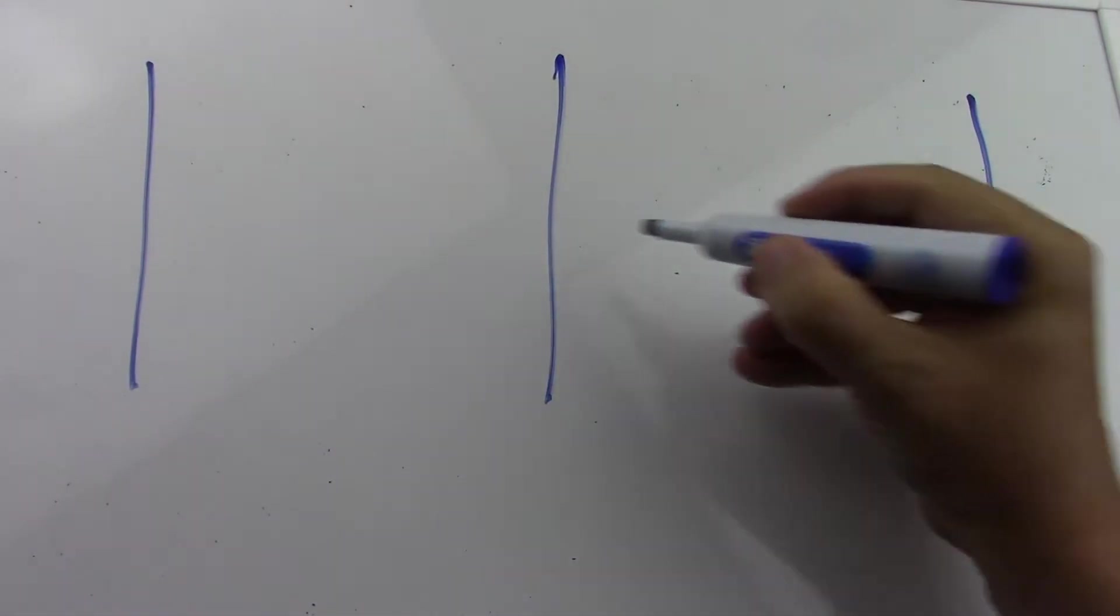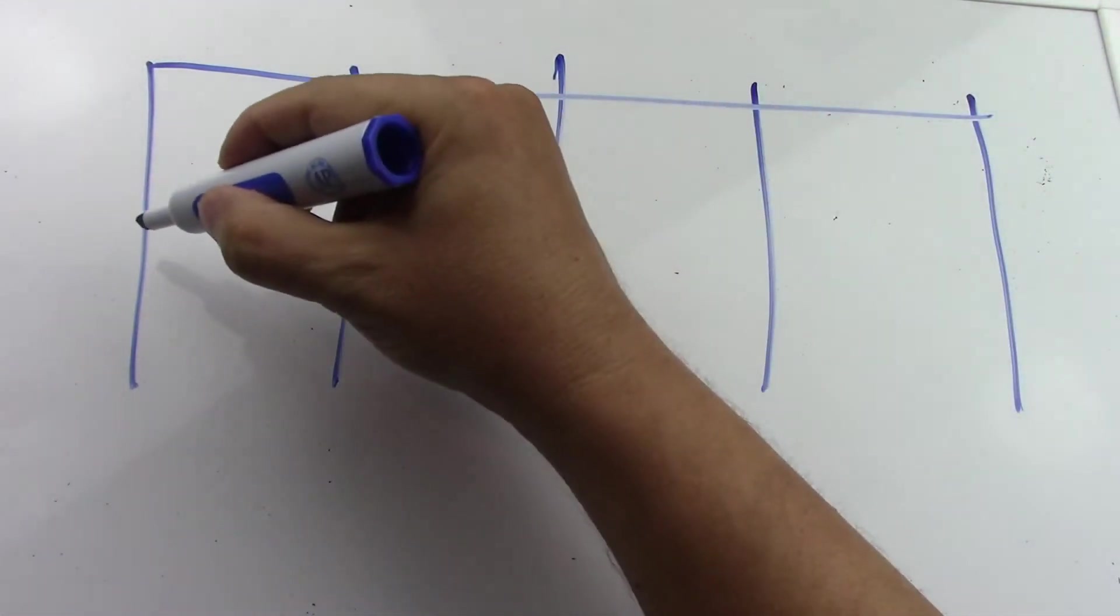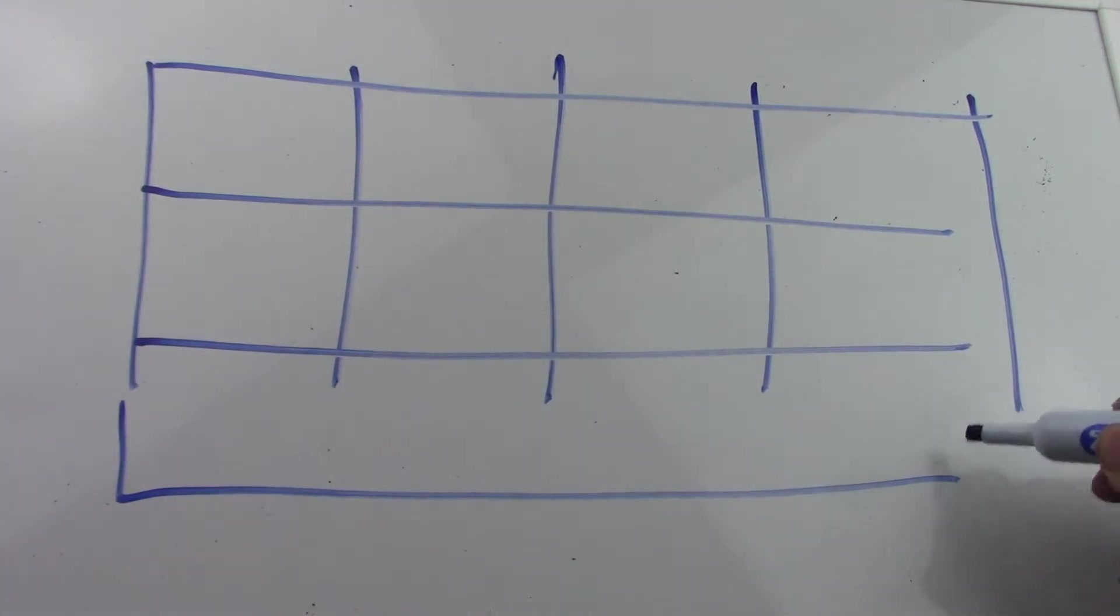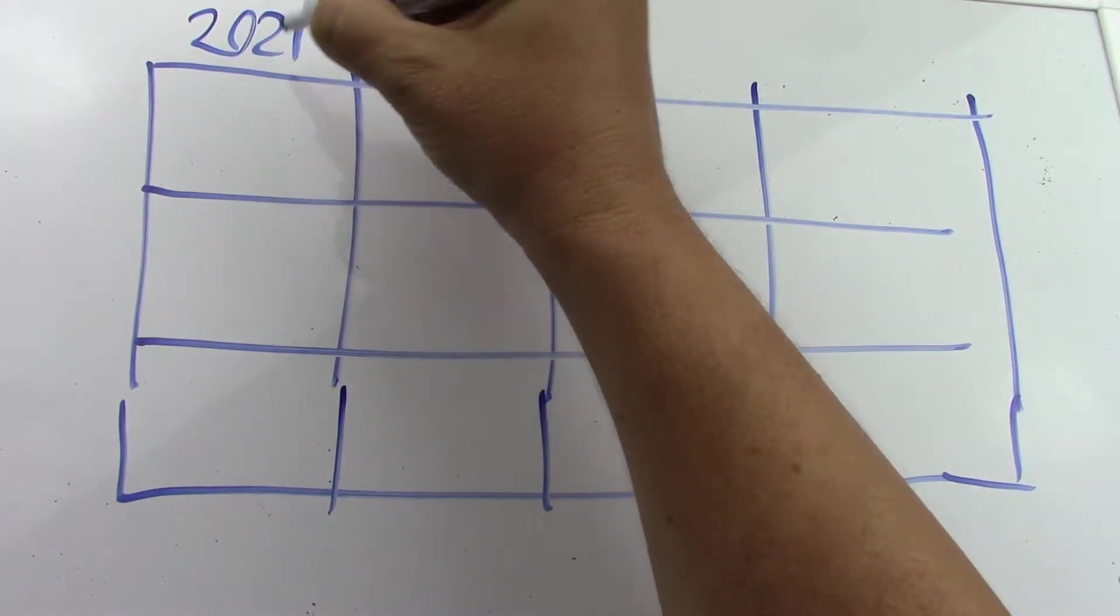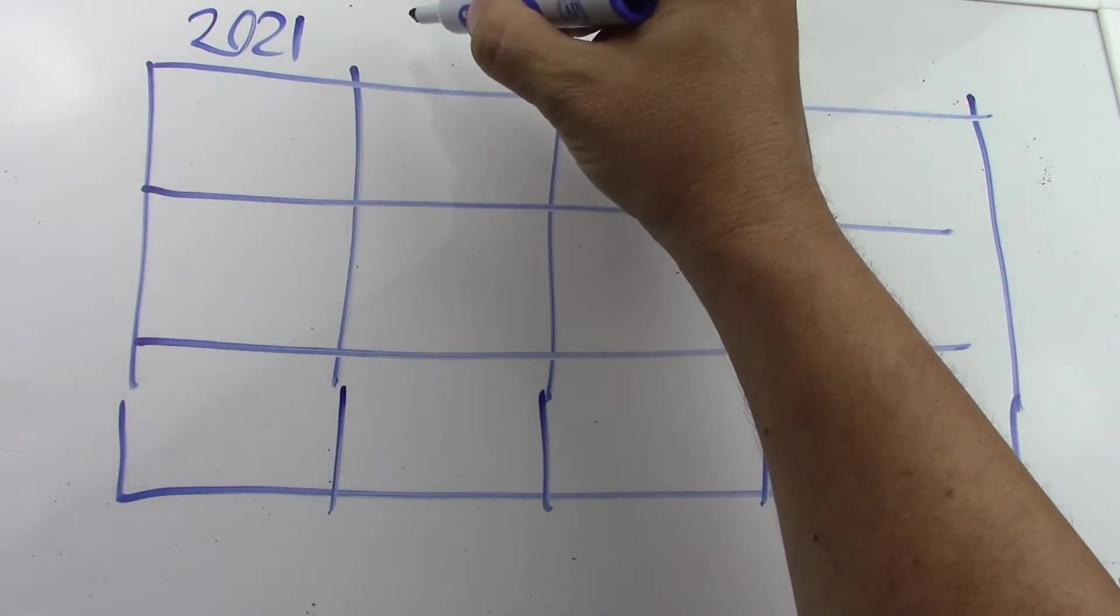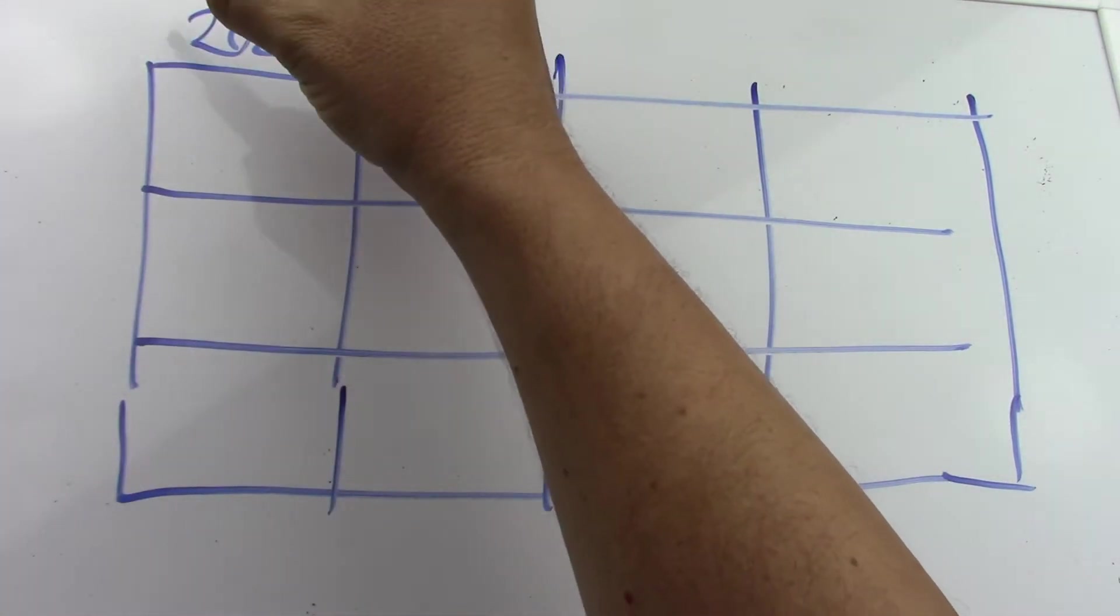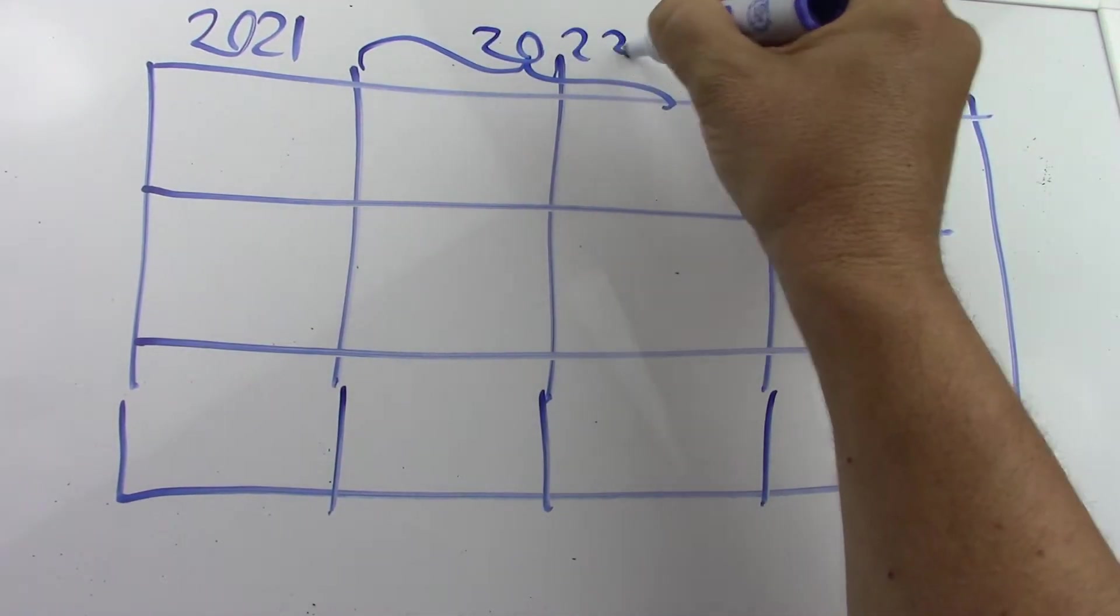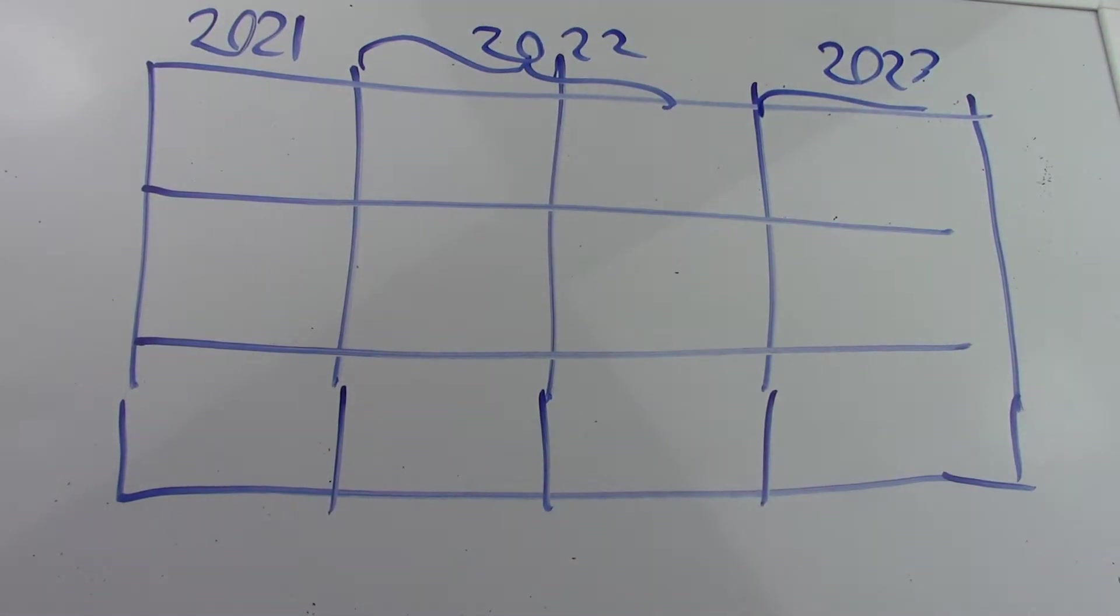So what does the schedule look like that I think I can do for the next two years? This is the second half of 2021, or really the semester from September to the end of 2021. This is all of 2022 and this is the beginning of 2023.